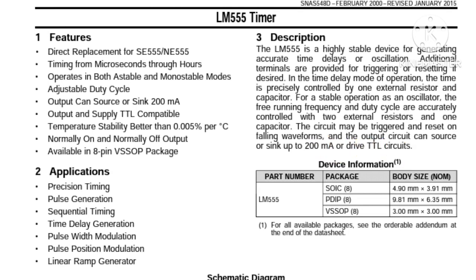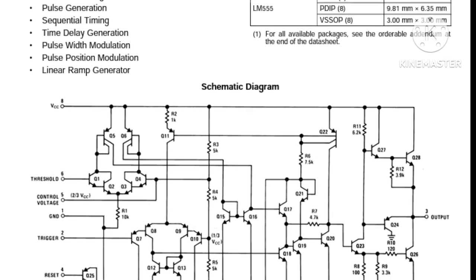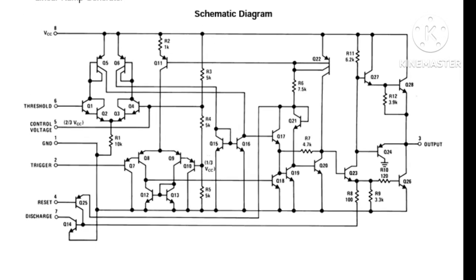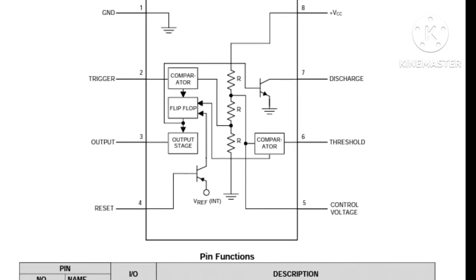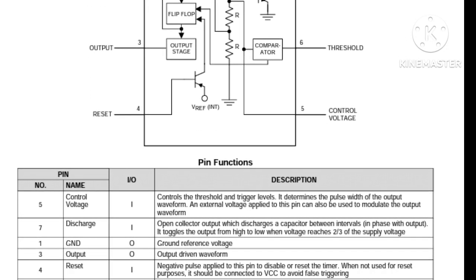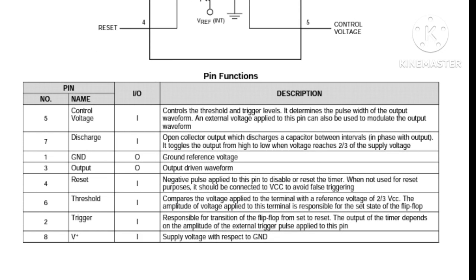Here we have the schematic diagram that shows the internal construction of the IC, which consists of many transistors and resistors. We also have the pin configuration and functions, which gives us a clear understanding of each leg of the IC and how each leg functions.